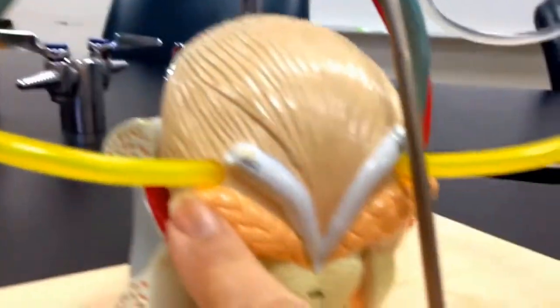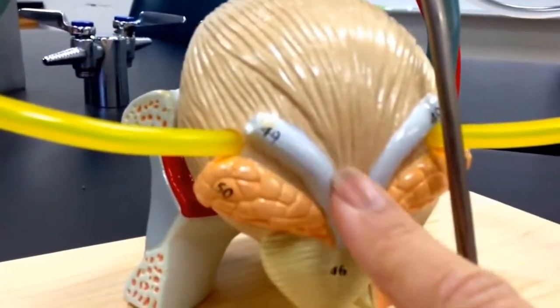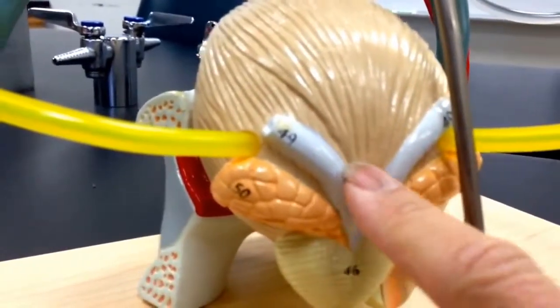These orangey things along the side are the seminal vesicles. This is the ductus deferens.